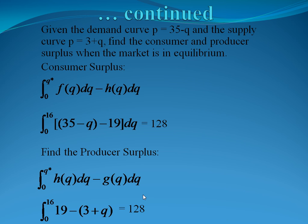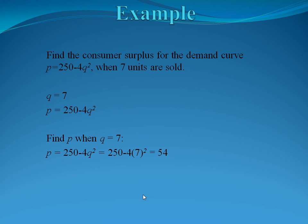Let's look at another example. Let's suppose now that we want to find a consumer surplus for the demand curve P = 250 - 4Q². And we want to do this when 7 units are sold. So we're not looking at an equilibrium point, we're looking at a specific quantity. So at that quantity, we can take that 7 units and find the corresponding price. So if we take Q = 7 and plug it into our demand curve, the corresponding price will be $54.